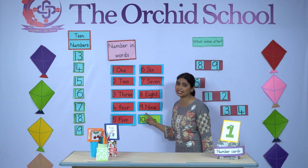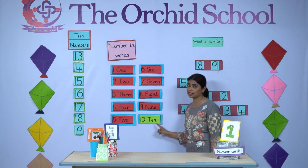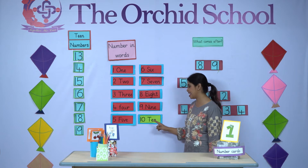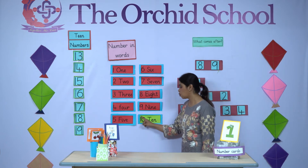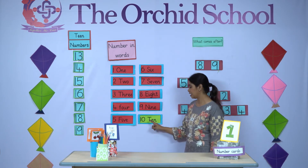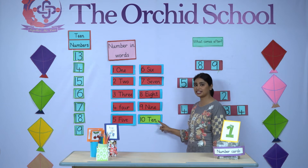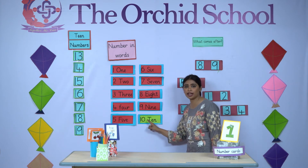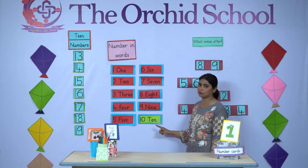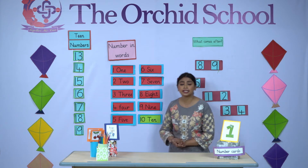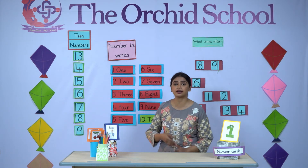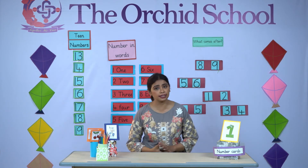And this is — what is this? Number 10! Yes. 1 and 0 — 10. T-E-N: 10. That's why I have pasted it on another paper, because this is number 10. And from here, we started the 10s.